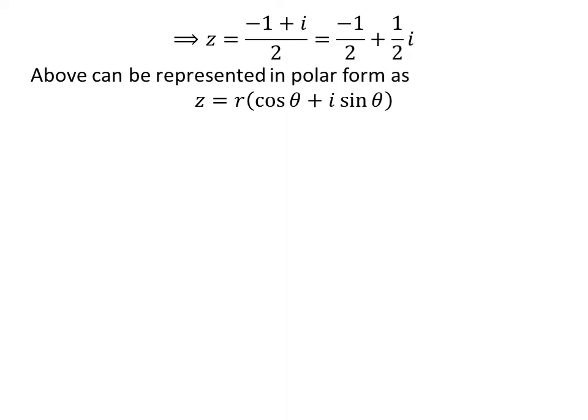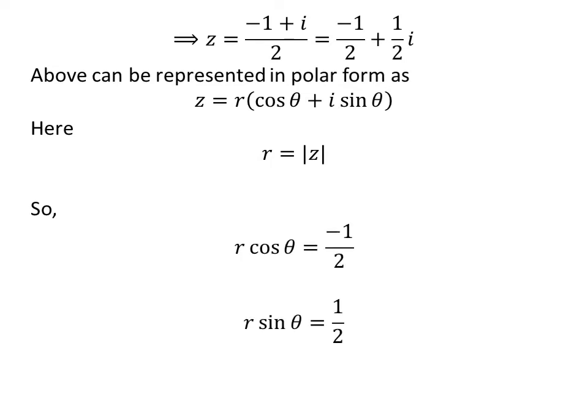The complex number z can be represented in polar form as r times cosine of theta plus i times sine of theta. Here, r is equal to the modulus of z, and r times cosine of theta is equal to minus half, and r times sine of theta is equal to half.